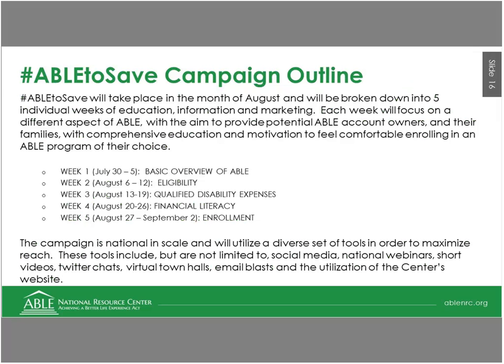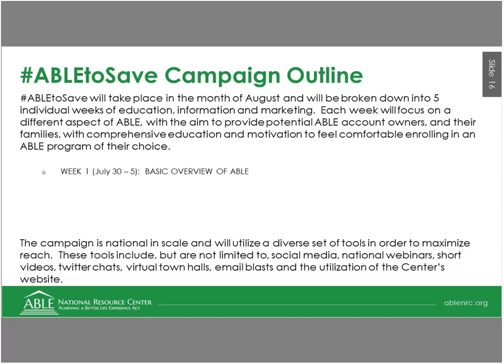The Hashtag ABLE2Save campaign has taken place throughout August. We broke the campaign down into five individual weeks of education, information, and marketing, each focused on a different aspect of ABLE, with the aim to provide potential ABLE account owners and their families with comprehensive education and motivation to enroll. You can see on the screen how we broke the weeks down. If you missed a webinar, recordings and materials are available on our website at www.ABLENRC.org.